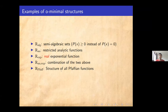Examples of O-minimal structures are actually various. The simplest one is just R_alg, consisting of semi-algebraic sets. The algebraic sets are already required in the definition of a structure; in semi-algebraic sets one simply replaces equality with a greater-than-or-equal sign. To this we can add functions — for example, the restricted analytic functions, the real exponential function, R_an,exp with a combination of both, or even more complicated structures like adding all Pfaffian functions. So O-minimality is not necessarily a unique thing; we also have to specify which O-minimal structure we are actually working in.